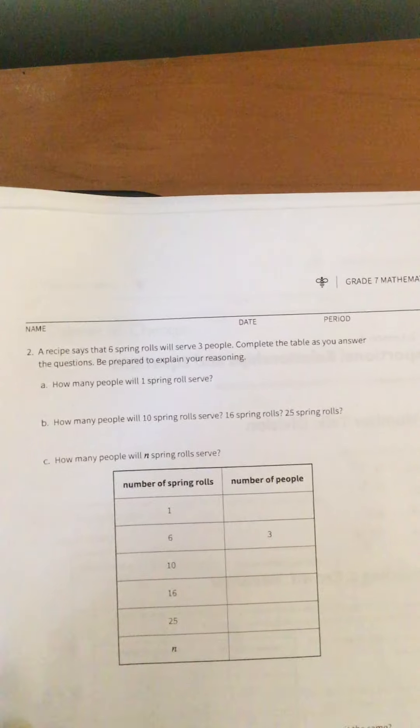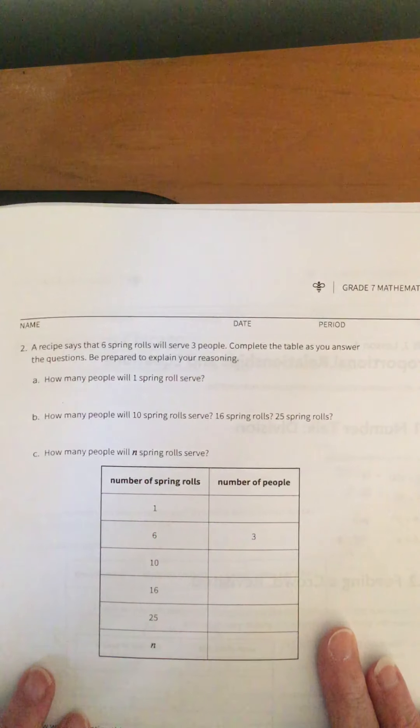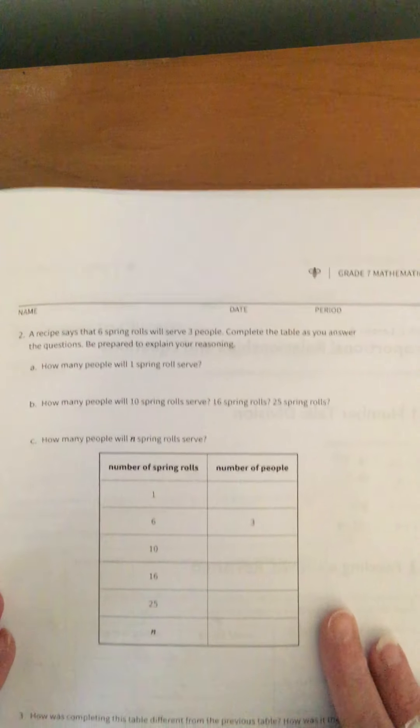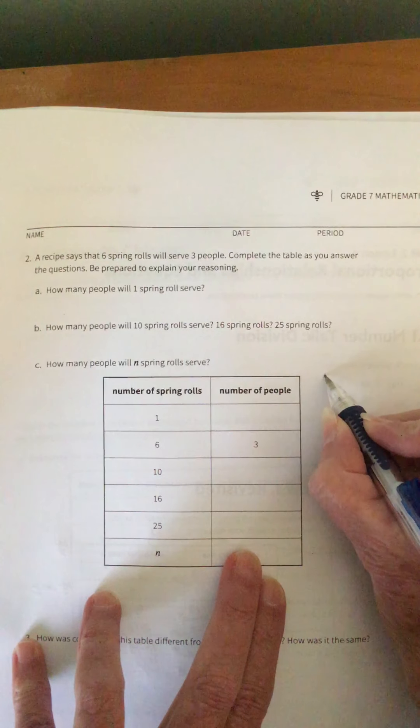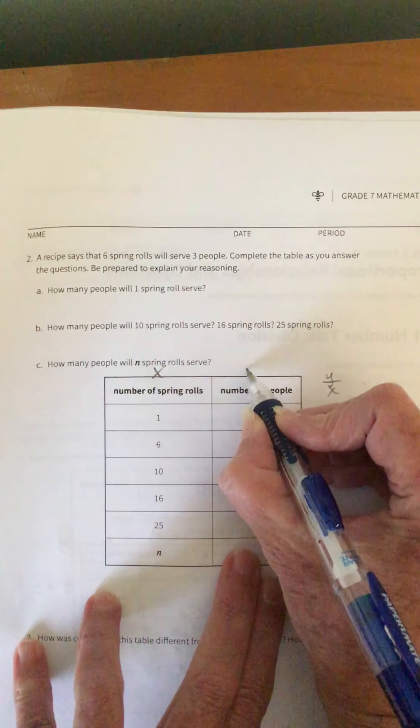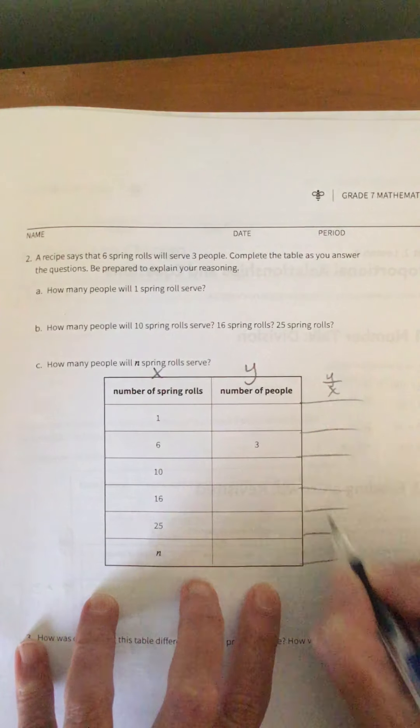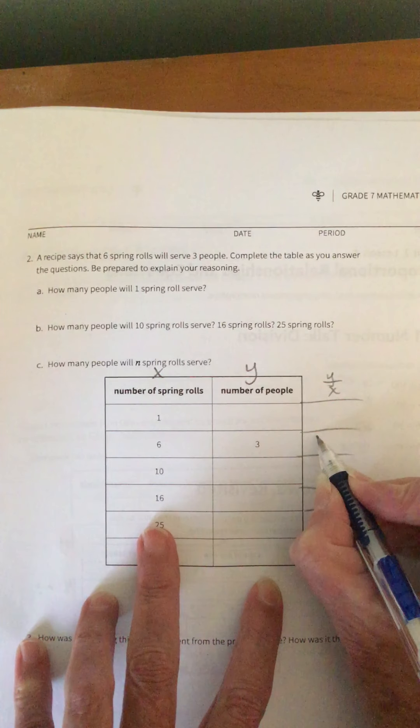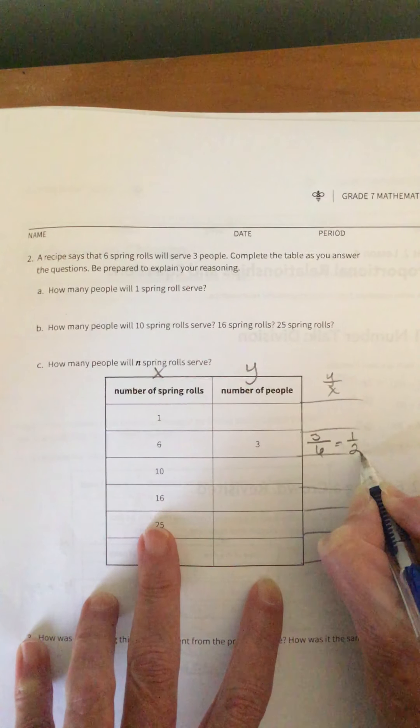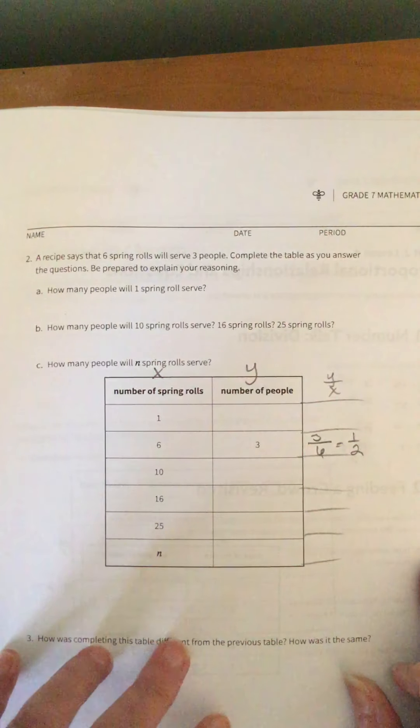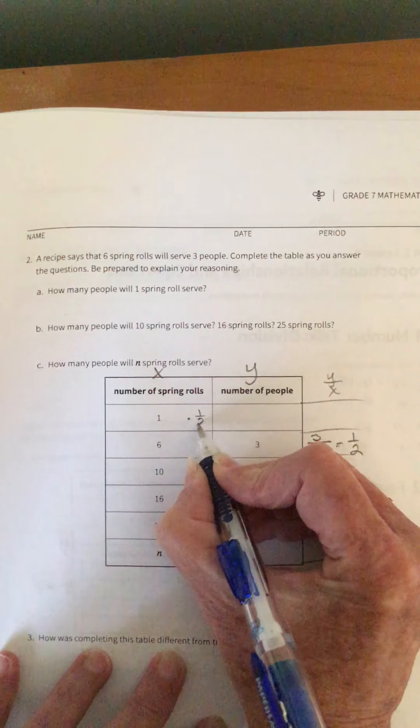Okay, number 2. A recipe says that 6 spring rolls will serve 3 people. Complete the table as you answer the questions. Be prepared to explain your reasoning. So once again, I'm going to do my Y over X, where this is my X column and this is my Y column.